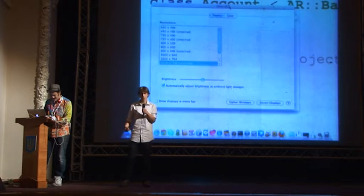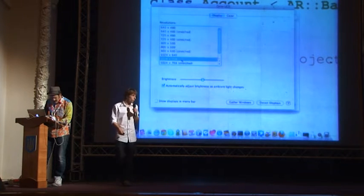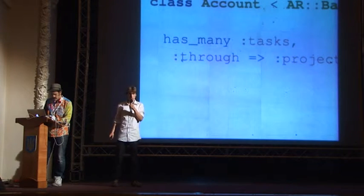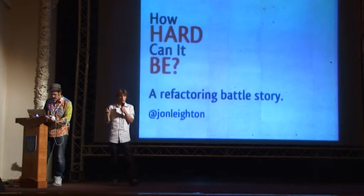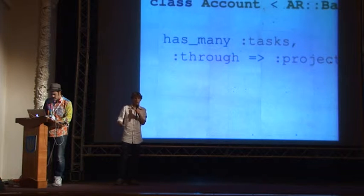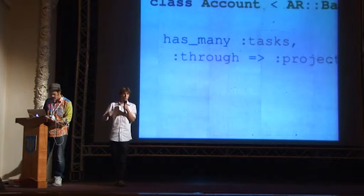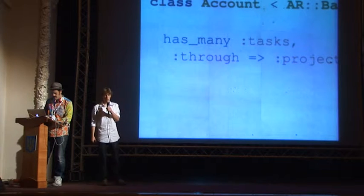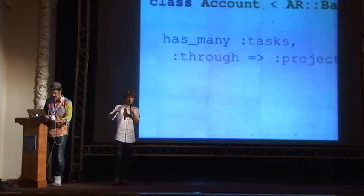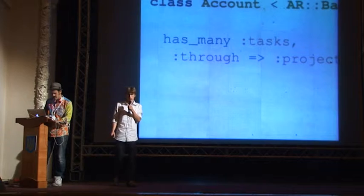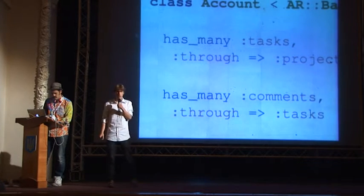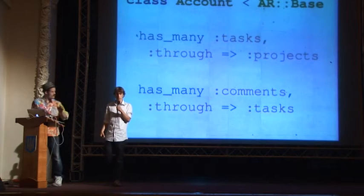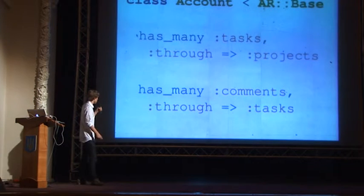I decided to scratch an itch. We've probably all seen through associations in Rails. But in Rails 3, what you can't do is have a through association that goes through another through association — essentially multiple joins in one query. You can't do that in Rails 3. This was something that in previous projects I'd quite wanted to be able to do, and it annoyed me that it didn't work.